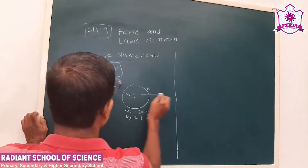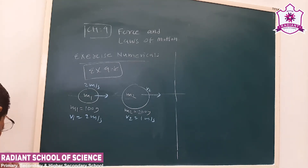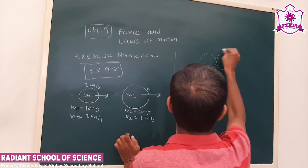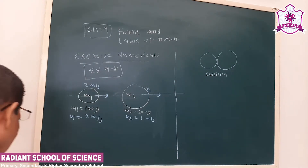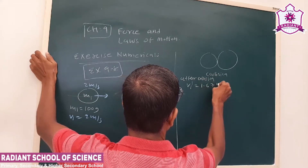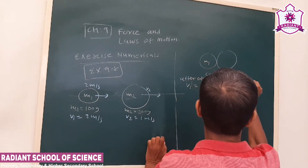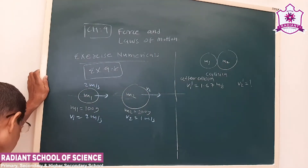They are moving in the same direction on the same line. We can see that V1 is larger than V2, so naturally they will collide. After collision, the first object has velocity V1-dash equal to 1.67 meters per second. We have to find out the velocity of the second object. Here also we use the law of conservation of linear momentum.